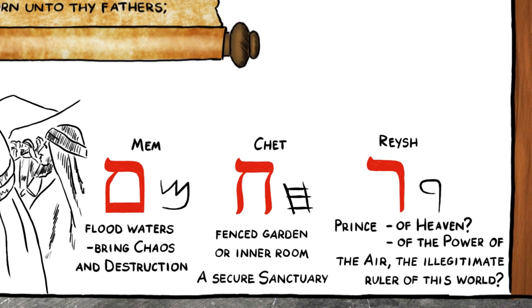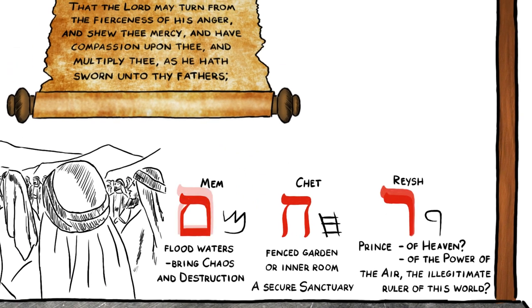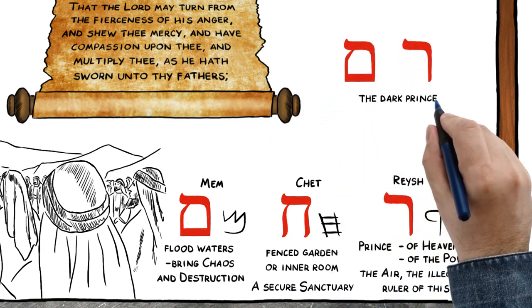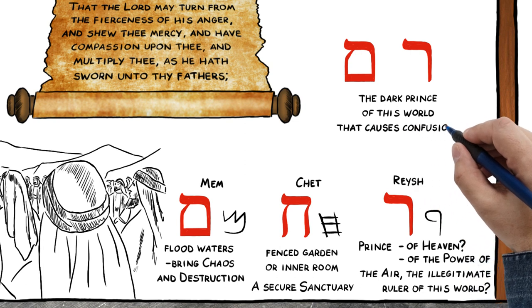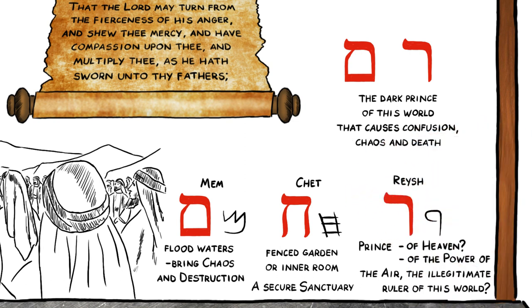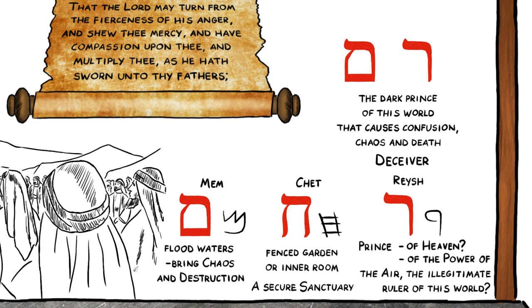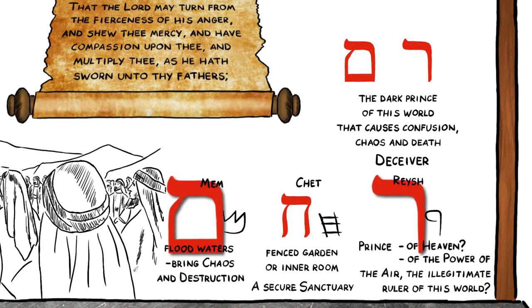There is no mystery as to the meaning of the word composed by combining the first and last picture letters in the Hebrew word for compassion. The first and last letters of compassion in the Hebrew are Resh and Mem. Resh Mem is the picture of the dark prince of this world that causes confusion, chaos, and death. The Hebrew word for deceiver is Resh Mem — exactly the same two letters that bookend the Hebrew word for compassion.